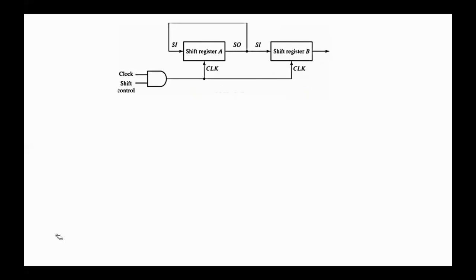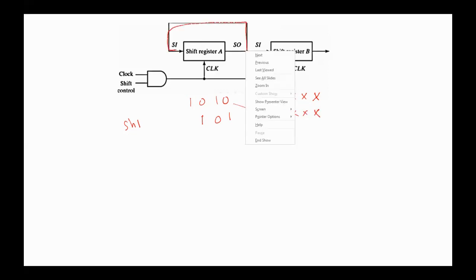To demonstrate how serial transmission is performed, suppose the contents of register A is 1010 and register B has don't-care bits. After the first shift control on the positive edge of the clock pulse, the contents of register A will be 1010 with the 0 transmitted to B (X, X, X, 0), and due to the feedback, this bit circulates back.